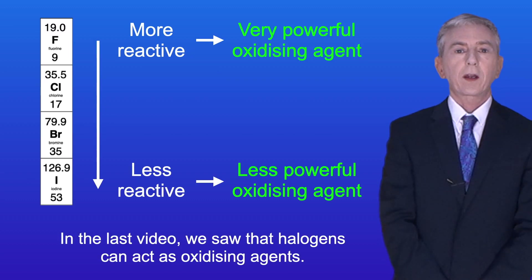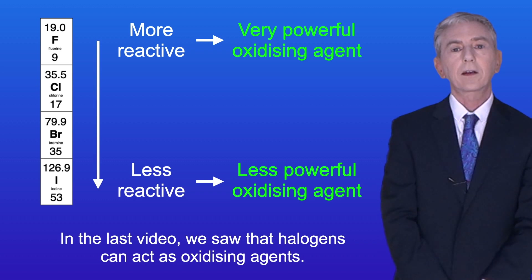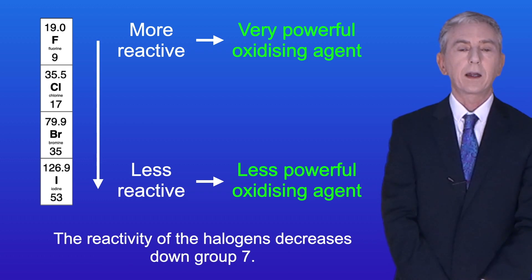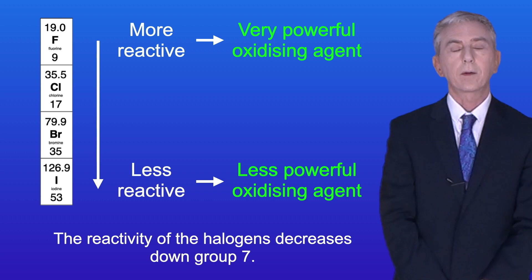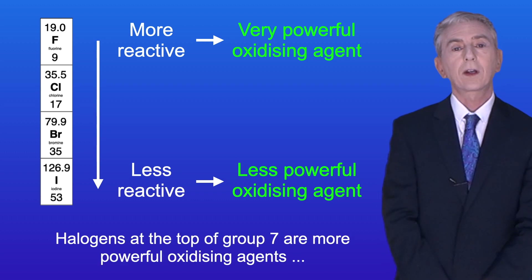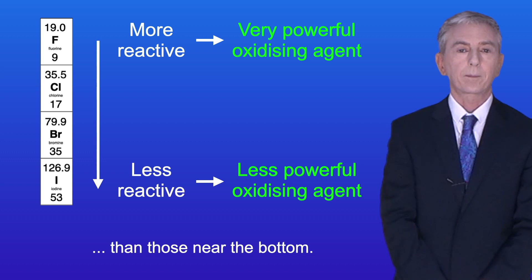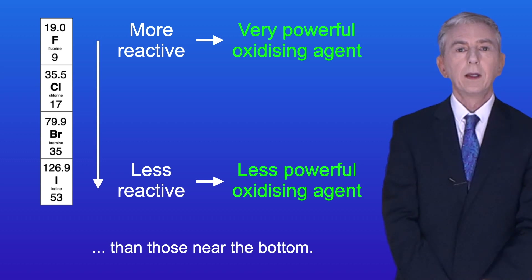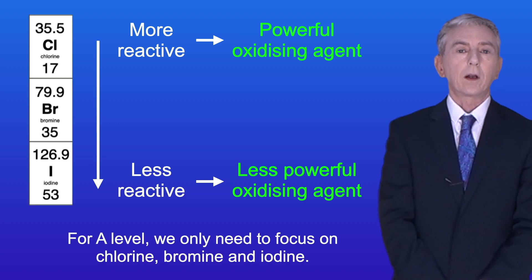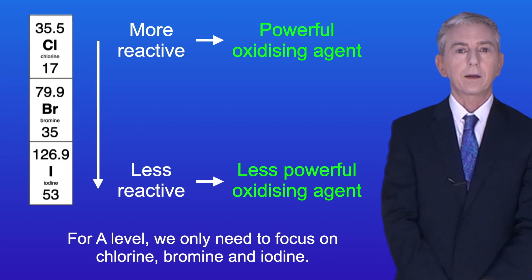In the last video we saw that halogens can act as oxidizing agents and the reactivity of the halogens decreases down group 7. Halogens at the top of group 7 are more powerful oxidizing agents than those near the bottom. In this video we're looking at the displacement reactions of halogens and for A-level we only need to focus on chlorine, bromine and iodine.